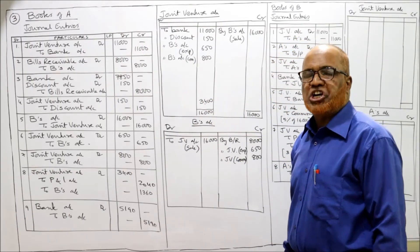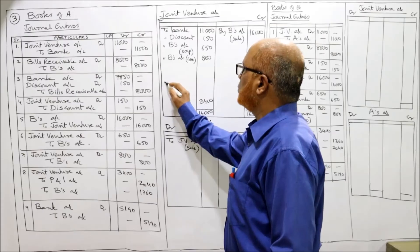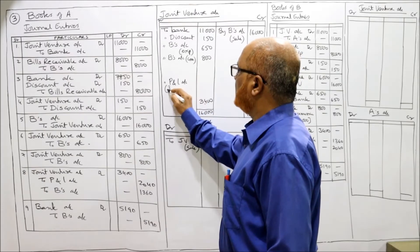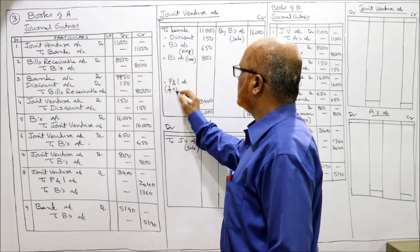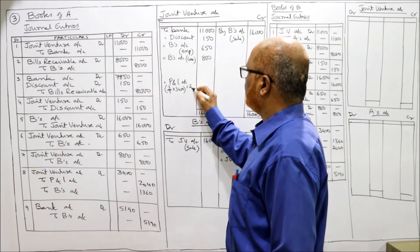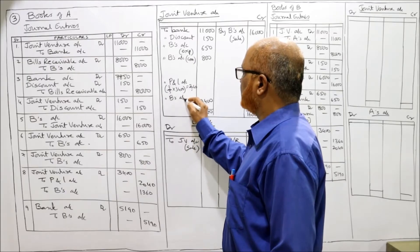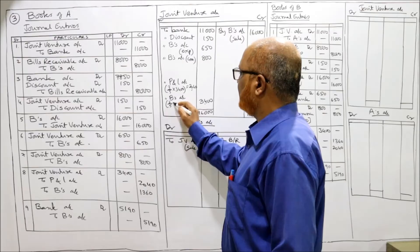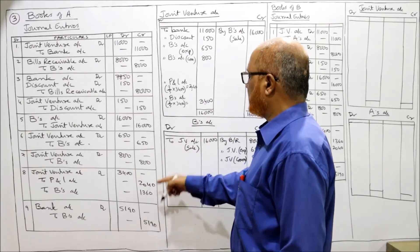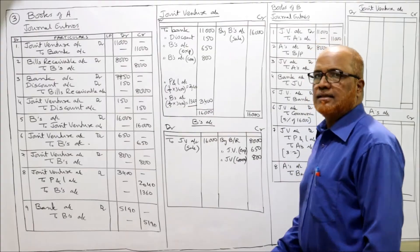This profit will be shared by both co-venturers in the profit sharing ratio. To P&L Account: 3/5 into 3,400 equals 2,040. To B's Account: 2/5 into 3,400 equals 1,360.